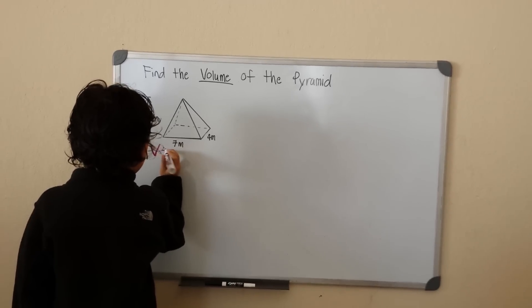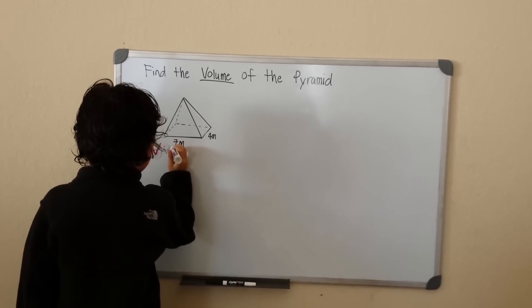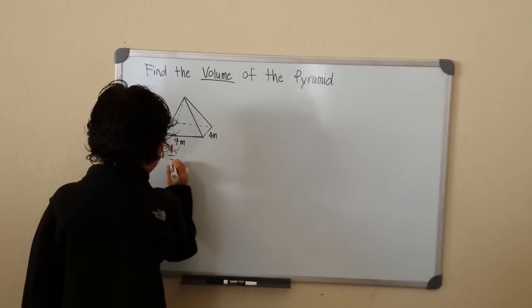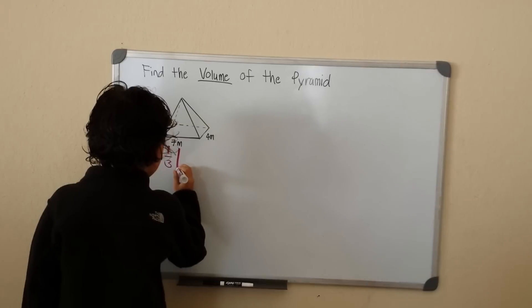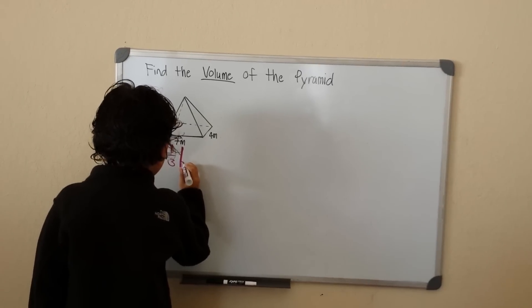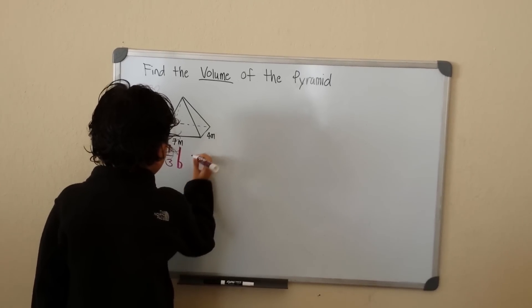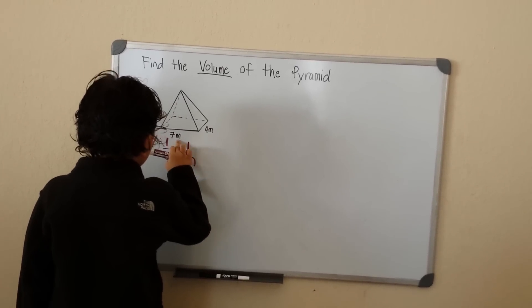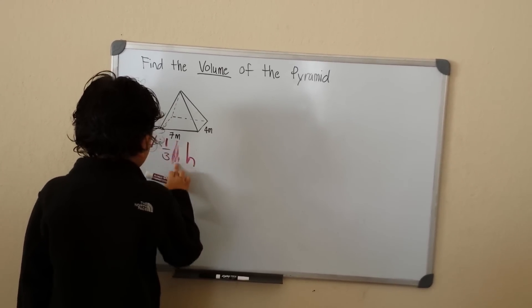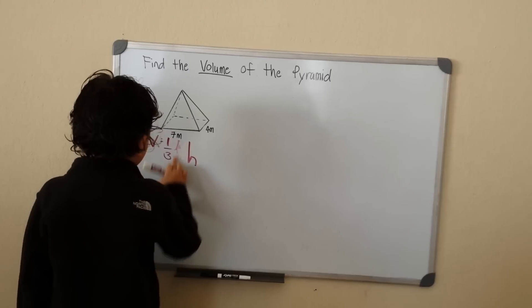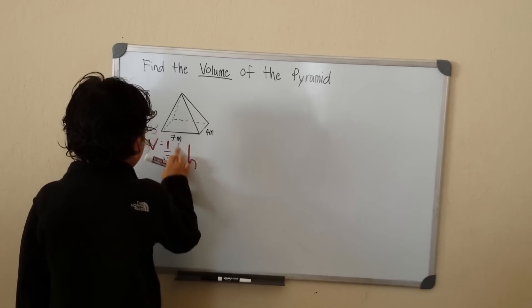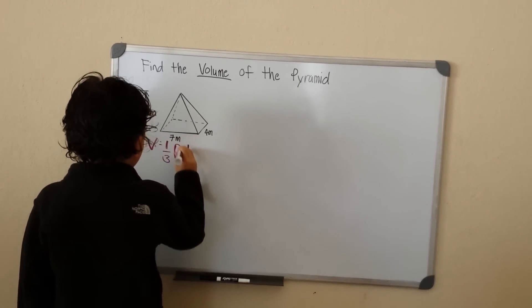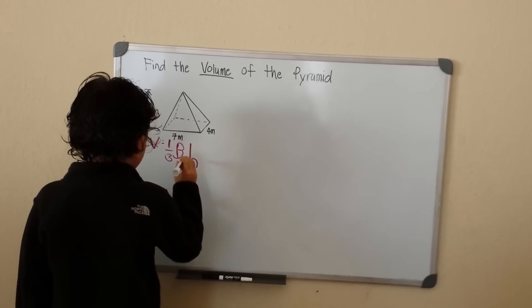Volume is equal to 1 over 3 times the base times the height. Or we can change this to capital B, since that means that you're at the base.